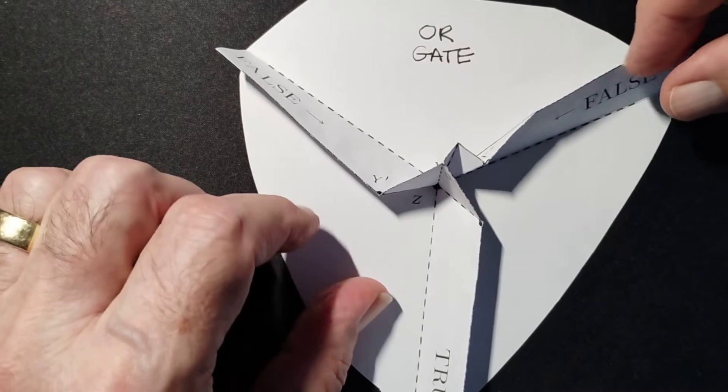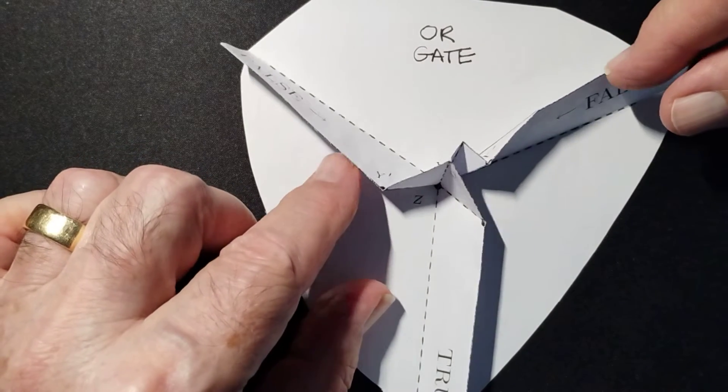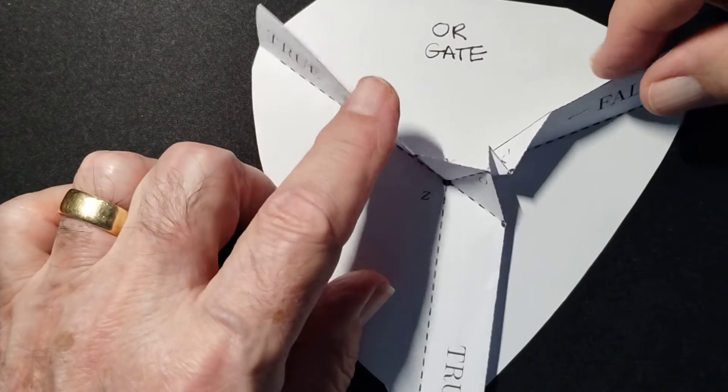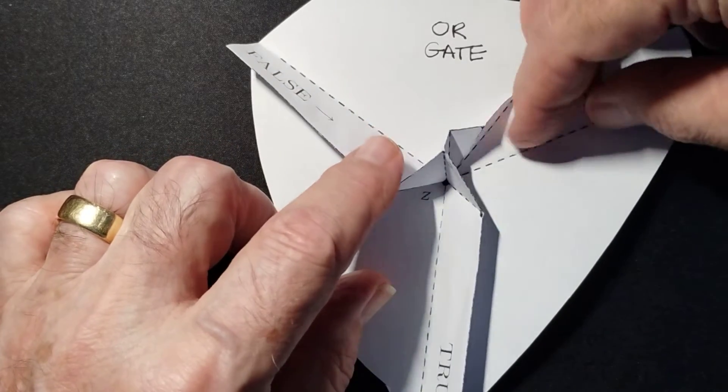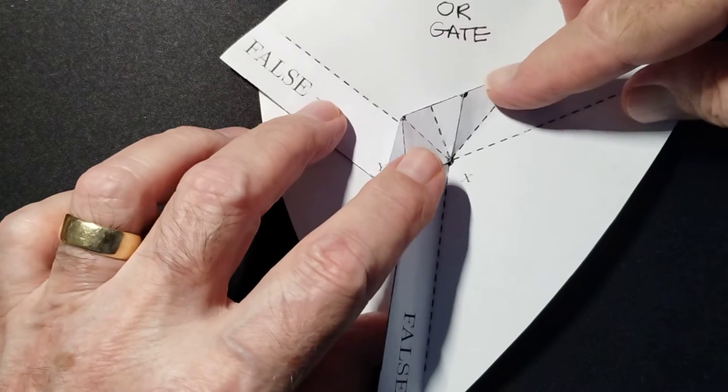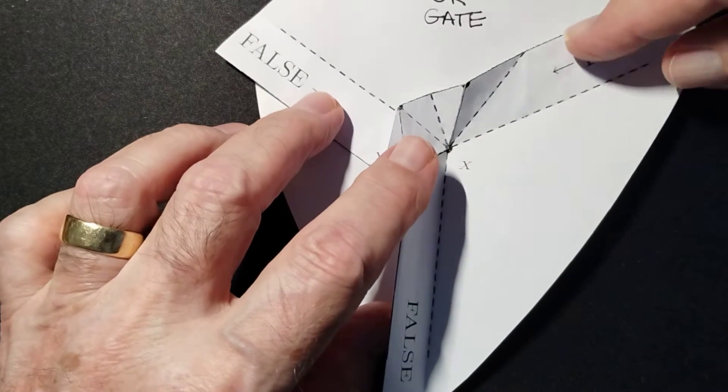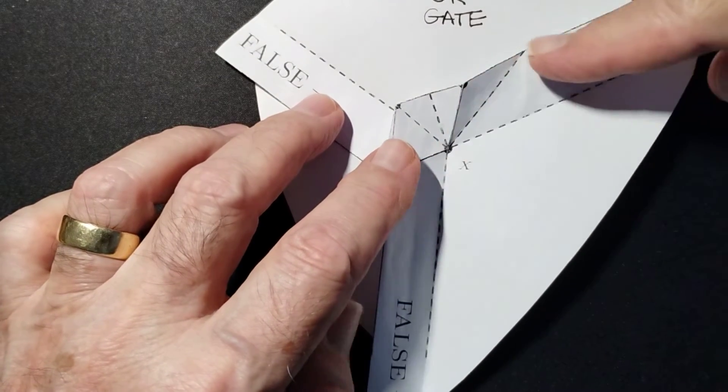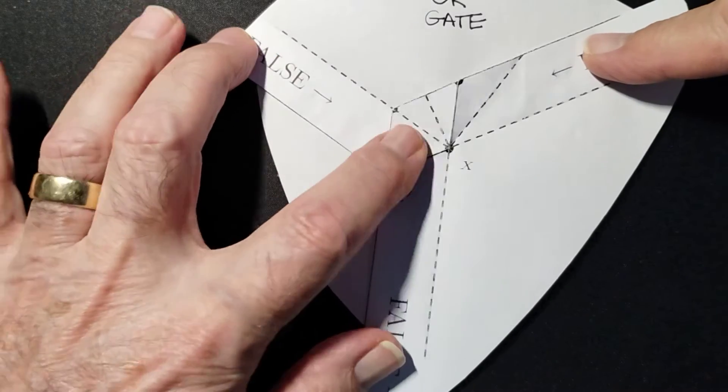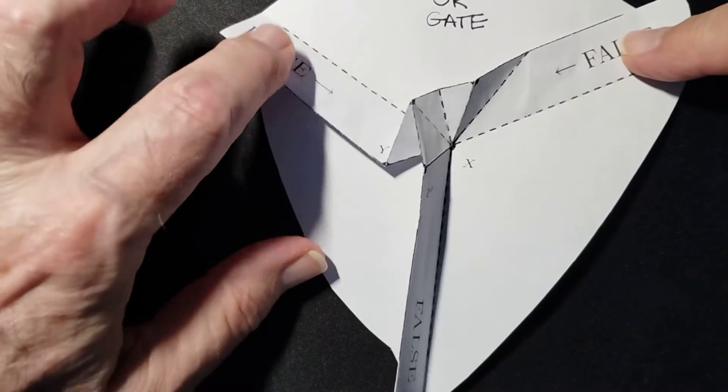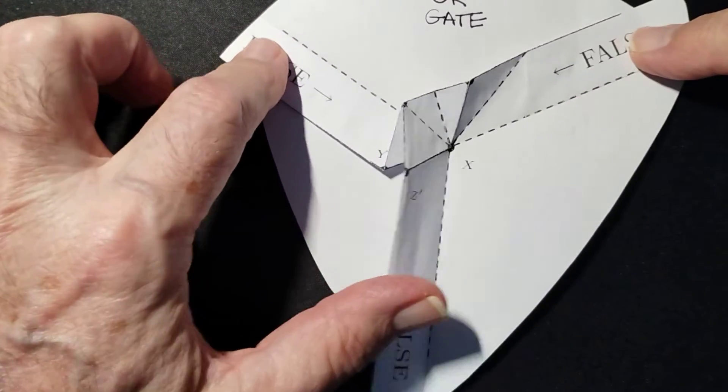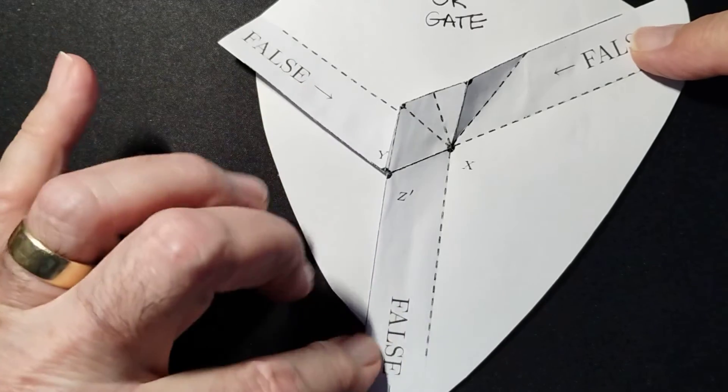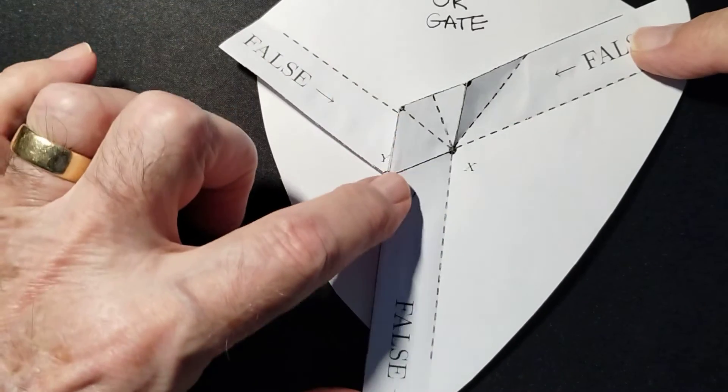This is an OR gate, so the idea behind the operation of an OR is that if there is a true present in the operands, then the answer will always be true. The only way to get a false is if both operands are false. So in this case we've got two inputs, one false, the other false, and the output has been calculated via the paper widget as false.